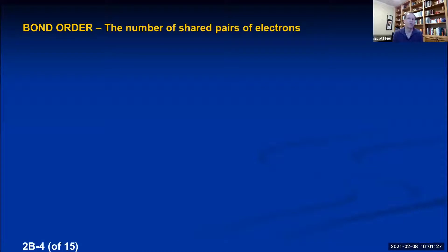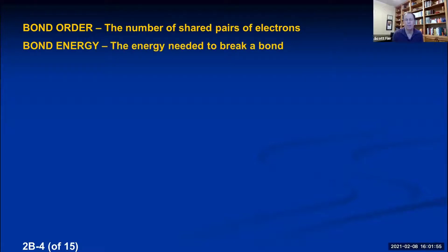To relate bond order to experimental data, we can measure two properties. First, bond energy: the energy needed to break a chemical bond — we can zap molecules with photons of electromagnetic radiation, raising the energy until the bond breaks, then record the photon energy used. Second, bond length: the distance between the two nuclei of bonding atoms, measured by diffraction. We want to see if these measured values correlate with what Lewis theory predicted.